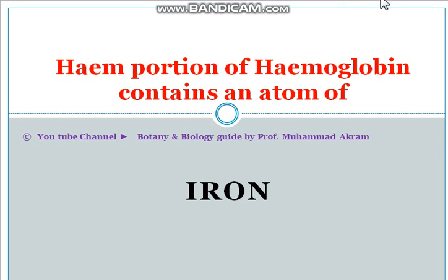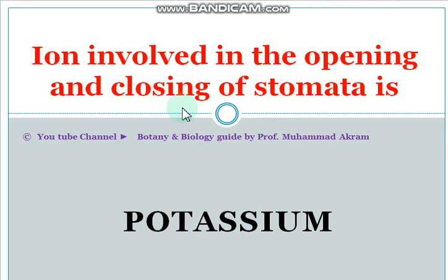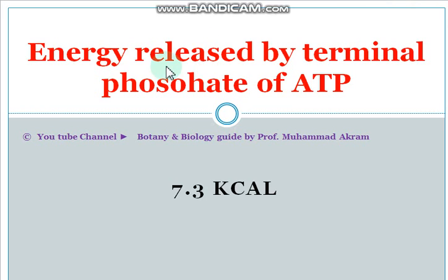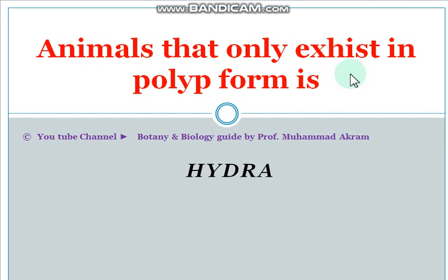The ion involved in opening and closing of stomata is potassium — it is involved in opening and closing of stomata. Energy released by the terminal phosphate of ATP is 7.3 kilocalories.